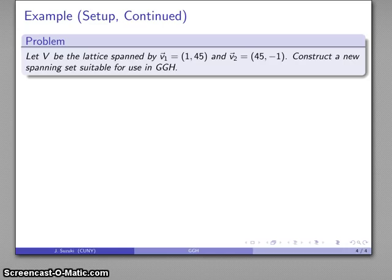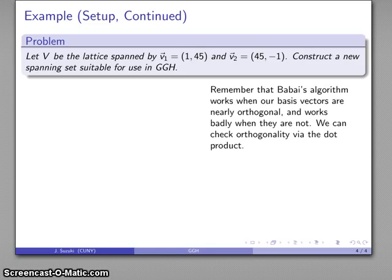The next thing we have to do is set up a suitable public basis for our lattice, and we want to make sure that the public basis consists of vectors that are more or less parallel. Remember that LLL algorithm works best when the basis vectors are nearly orthogonal, and it works very badly when they are not.